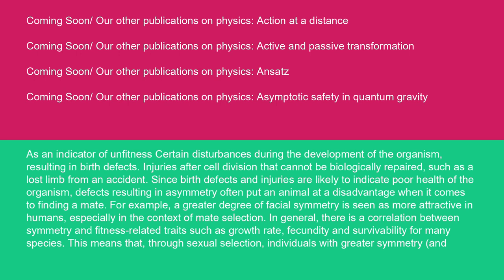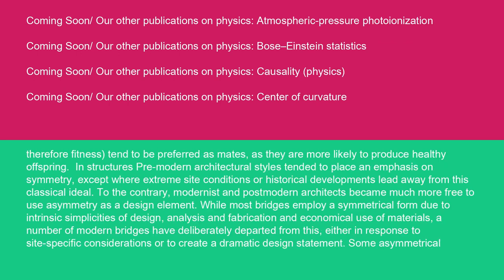For example, a greater degree of facial symmetry is seen as more attractive in humans, especially in the context of mate selection. In general, there is a correlation between symmetry and fitness-related traits such as growth rate, fecundity, and survivability for many species. This means that, through sexual selection, individuals with greater symmetry and therefore fitness tend to be preferred as mates as they are more likely to produce healthy offspring.